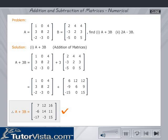Good. Therefore A plus 3B is equal to the matrix: 7, 12, 16; minus 6, 14, 11; minus 17, minus 3, 15. Now try and solve 2A minus 3B. Click on the next button.